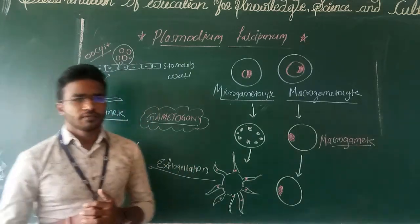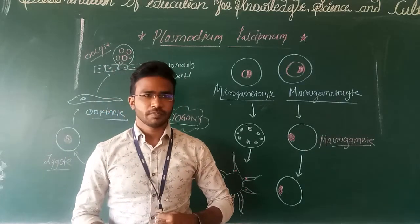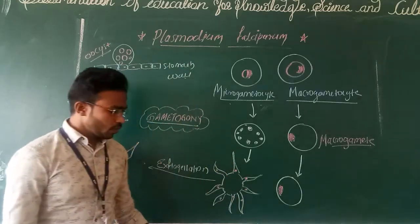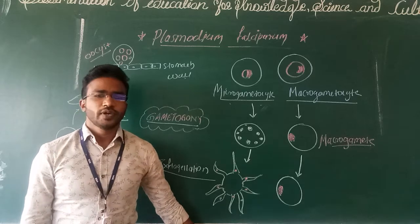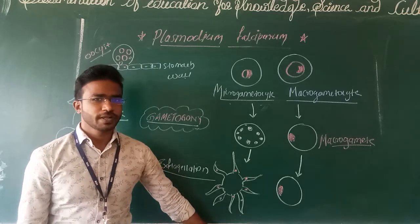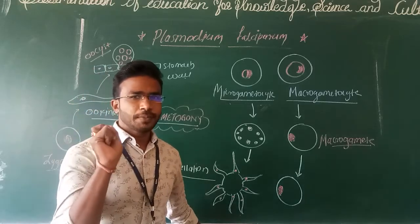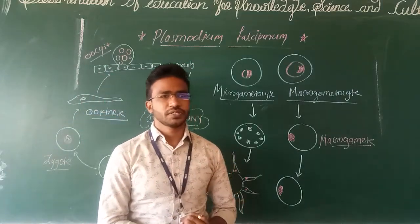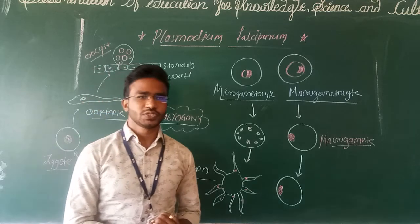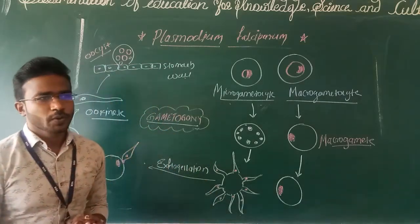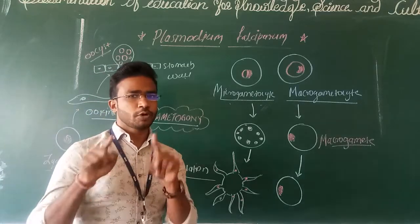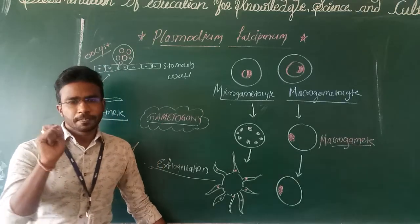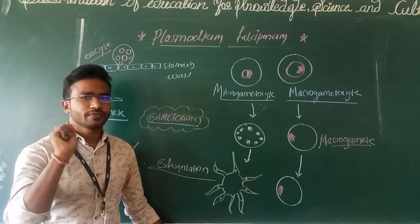Hello everyone. In the last lecture we started Plasmodium falciparum, which causes malaria disease. It is a common cause of malaria. In this lecture we are going to discuss the next part of the life cycle of Plasmodium falciparum. In the last lecture we discussed the life cycle in humans — the asexual way of reproduction known as schizogony. Now let's discuss the second part: sexual reproduction in mosquitoes, called gametogony.